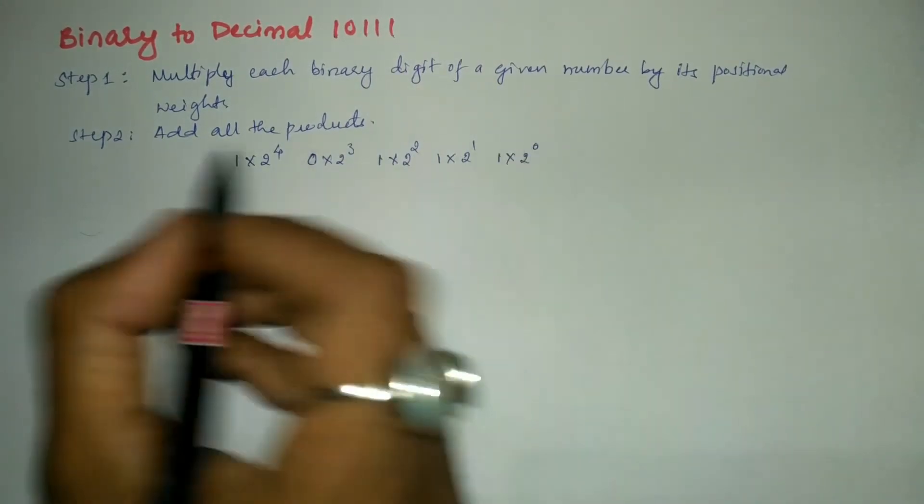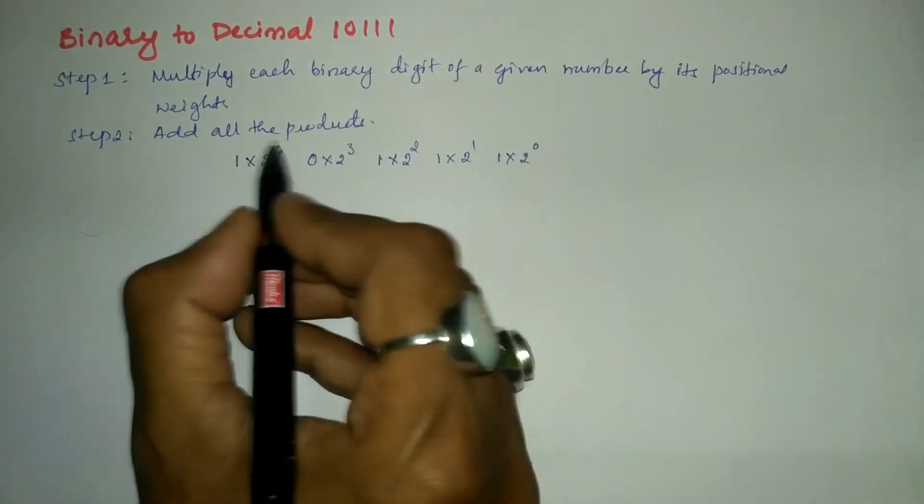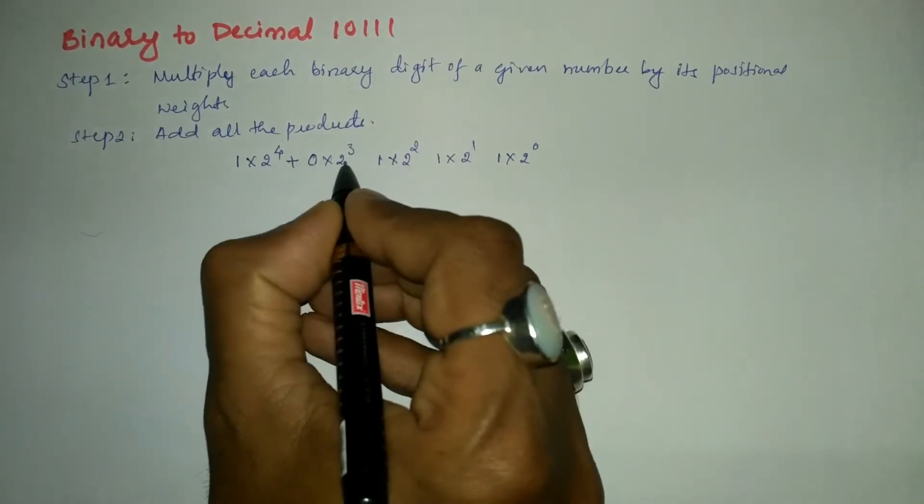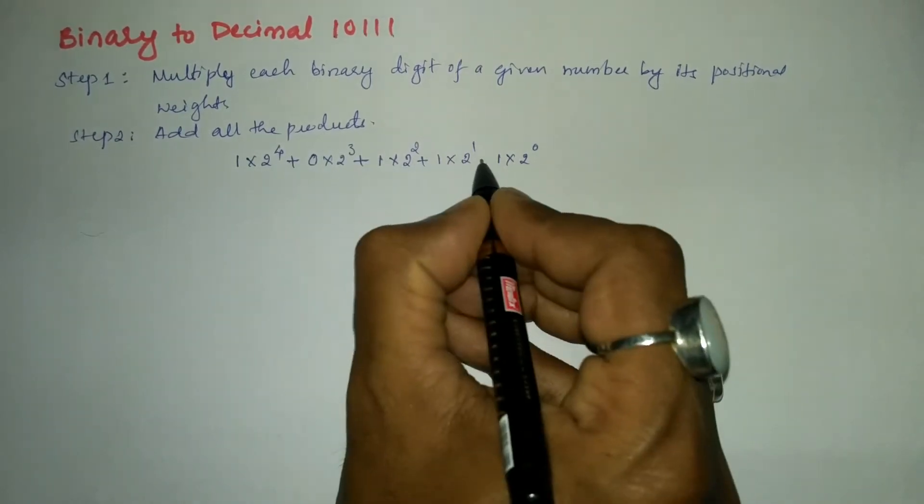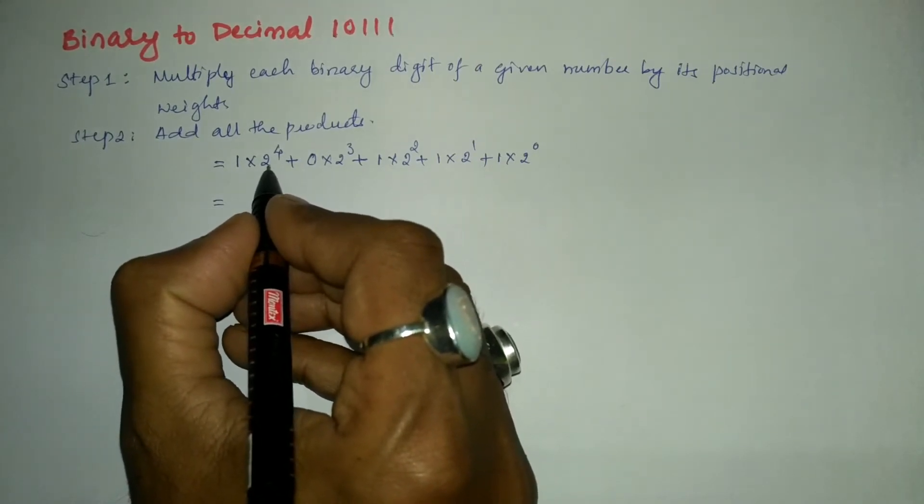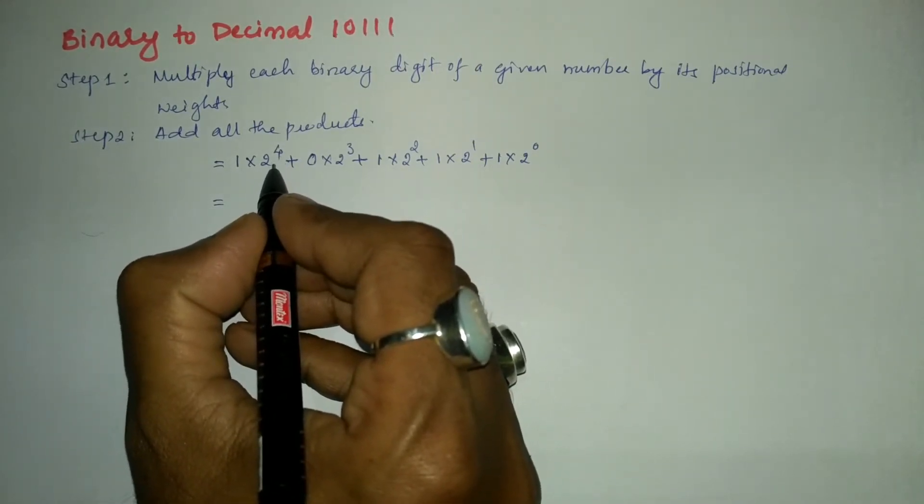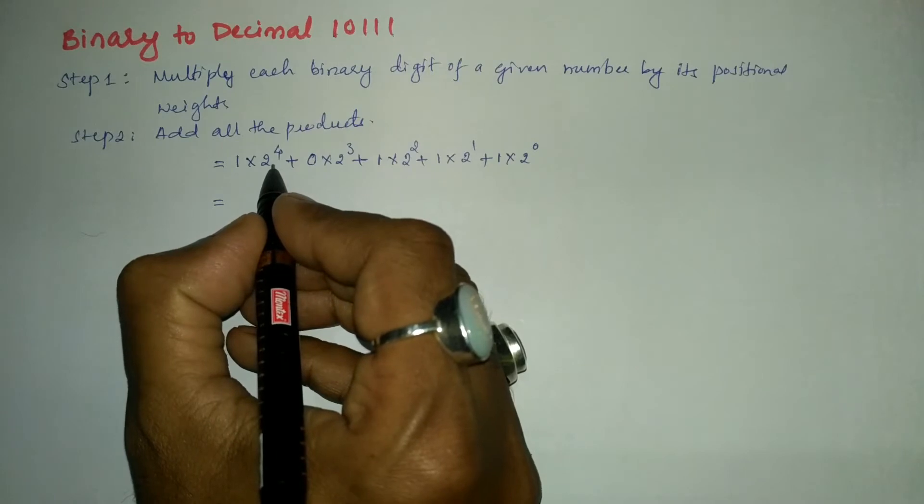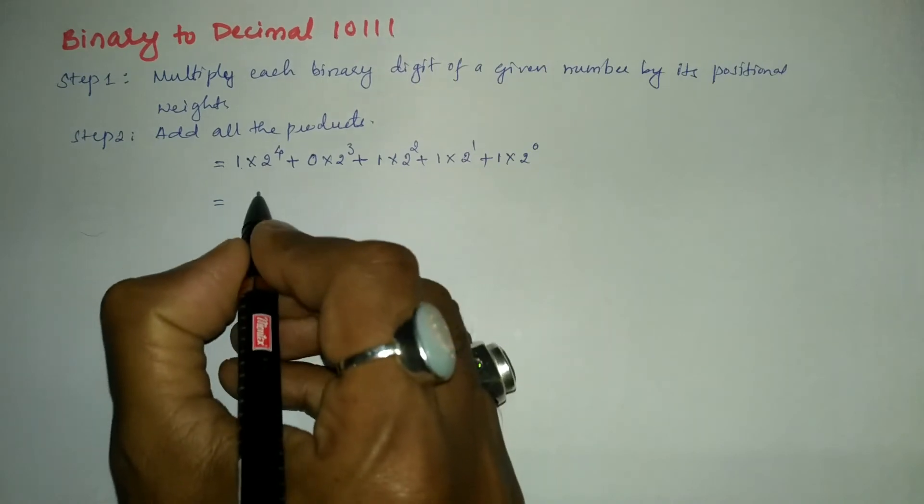Second step says that add all the products, so we are going to perform addition of all of these products. Now let us further simplify two to the power four. So that is two is to be multiplied four times: two to the four, four to the eight, eight to the sixteen. Sixteen ones are sixteen.